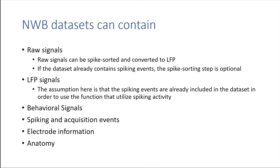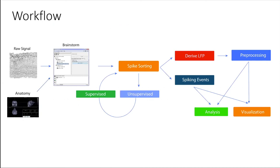You can store electrode information and also store the anatomy of the subject, or link to anatomy from an external file. The workflow is: import the raw NWB signal into Brainstorm, import the anatomy if linked or externally, then optionally do spike sorting if you have highly sampled signals. Spike sorting is comprised of two steps: first the unsupervised step where an automatic algorithm clusters the neurons, and then the user manually tweaks the clusters if needed. Then you get the LFPs — a downsampled filtered version of the raw signals — and can combine LFPs and spiking activity for analysis and visualizations.